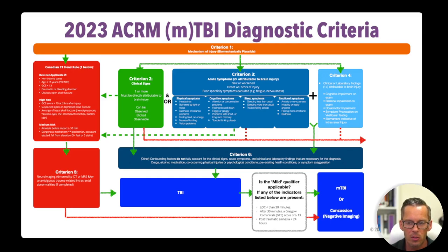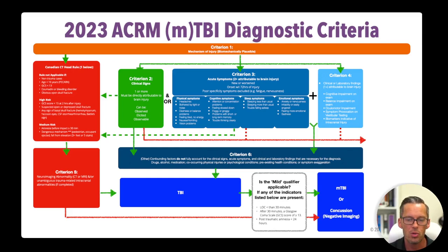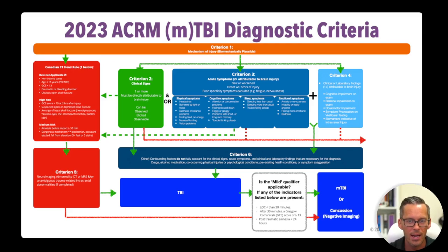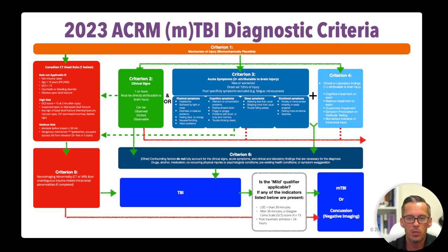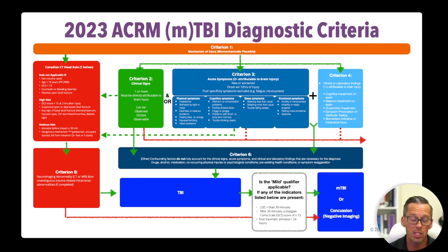This criteria is absolutely brilliant. I've been using it now for just over a year and haven't gotten to a single situation where I wasn't able to come up with an accurate diagnosis for a patient — whether that was a head injury, brain injury. Paper cut to the forehead is a head injury; we're talking about brain injuries here. Semantics do matter, especially when talking to patients. This criterion has pretty much proven itself true for a year now, with at least 50 to 70 patients in that period.